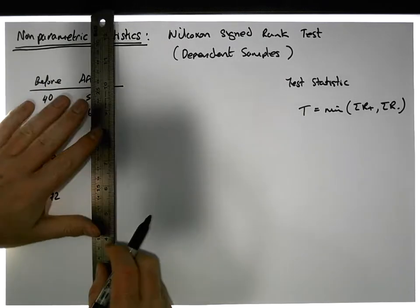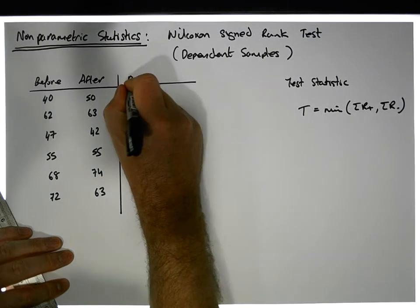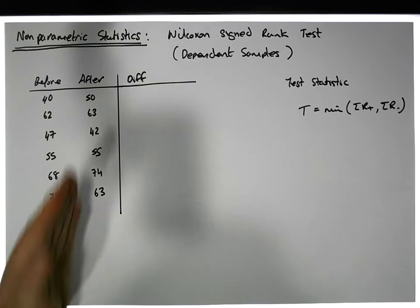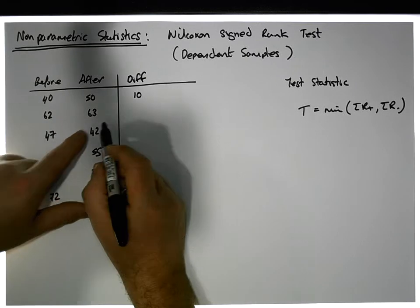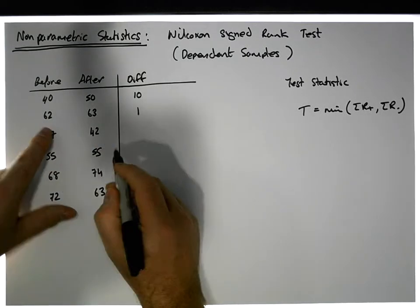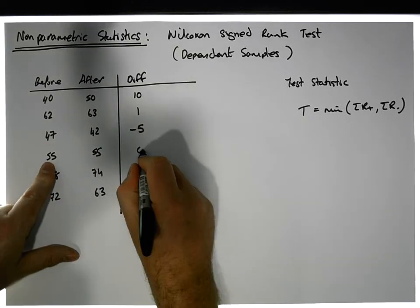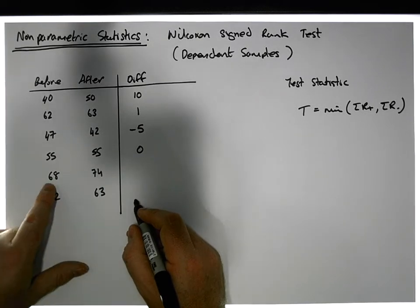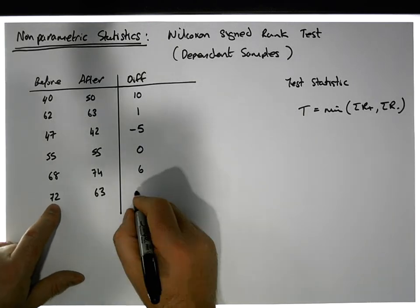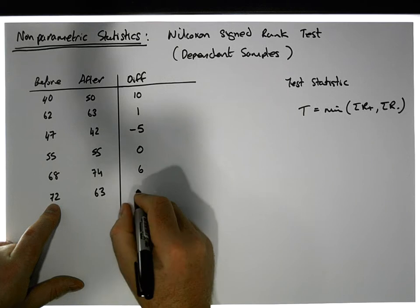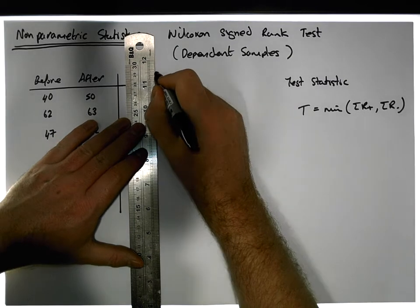Let's add a differences column. We calculate the differences as after minus before: 50 minus 40 gives us 10; 63 minus 62 gives us 1 — both positive. 42 minus 47 gives us minus 5 — that's negative. 55 minus 55 gives us 0. 74 minus 68 gives us 6. And 63 minus 72 gives us minus 9.